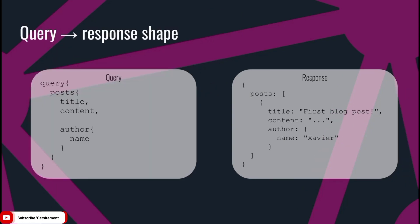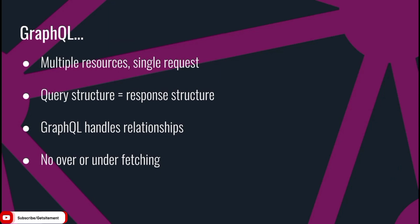The response of a GraphQL query has the exact same shape as the query itself, which is very useful because you'll know in advance how the API is going to respond — something a REST API doesn't guarantee. So to summarize: with GraphQL you can get multiple resources in a single request, the structure of your query defines the structure of the response, GraphQL understands relationships between objects, and you always get exactly the data you need — never too much and never too little.